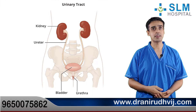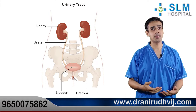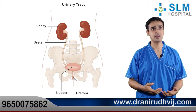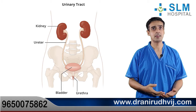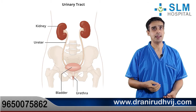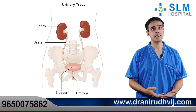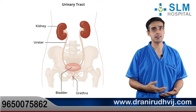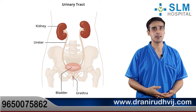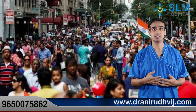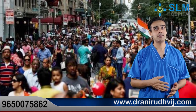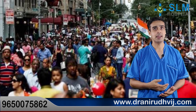Stones can form in any part of the urinary tract, right from the kidneys to the ureters to the urinary bladder, and can even get obstructed in the urethra. Stones are very common in the Indian population and they can occur in all age groups, both in males as well as females.